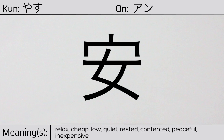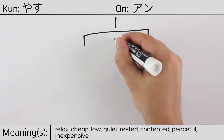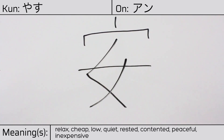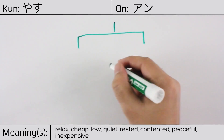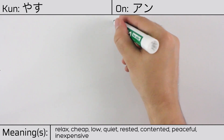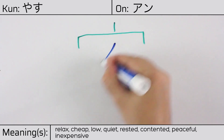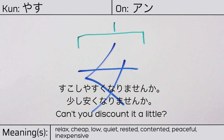Here is the stroke order. This character is made up of the following radicals or parts: the roof or house radical ukanmuri, and the kanji meaning woman or female. You can remember this kanji by the following hint: a woman relaxing at home. Our example sentence is: 少し安くなりませんか？ — Can you discount it a little?